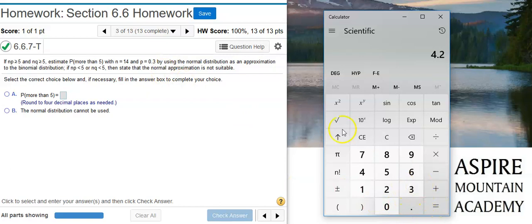4.2. So right there at the bat, I don't have to go any further because this requirement is not met. I know that I can't use the normal distribution to approximate the binomial.